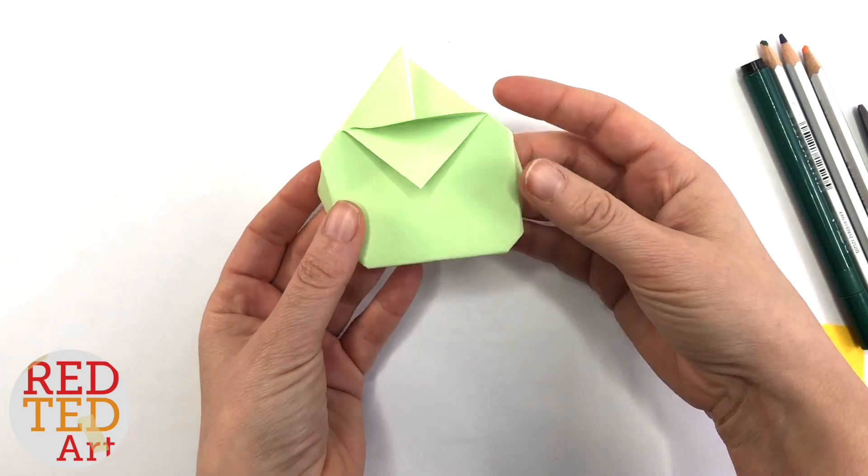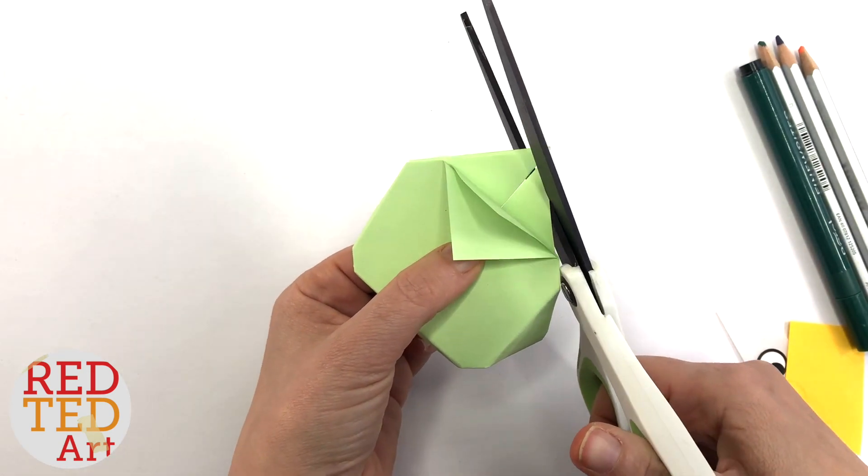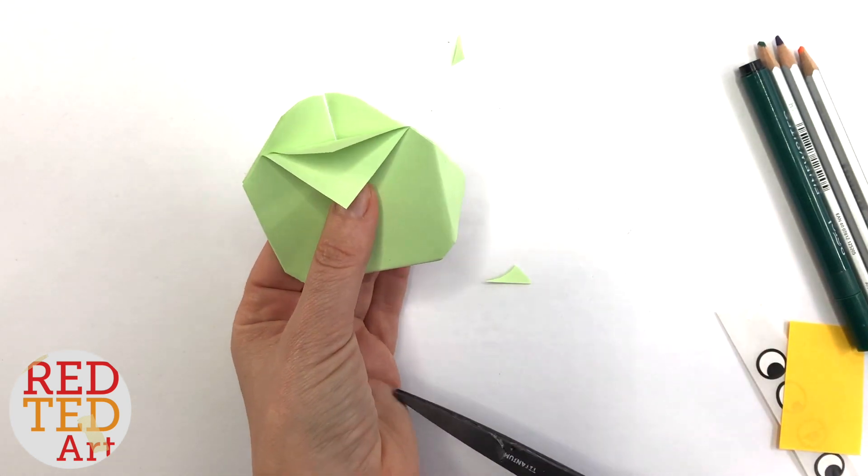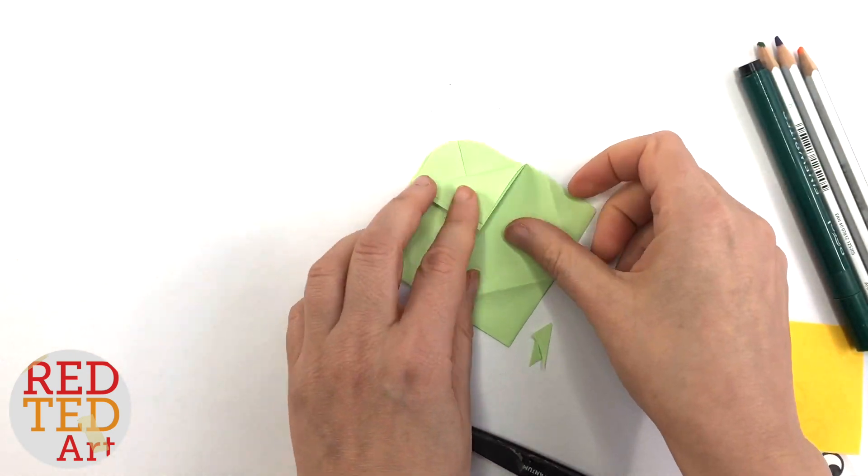So you've got your basic chick done. Now all you need to do is trim, especially mine, because my square wasn't perfect and my folding wasn't super neat. And decorate.